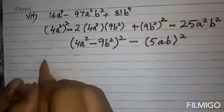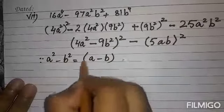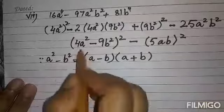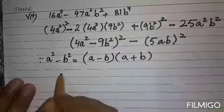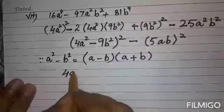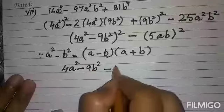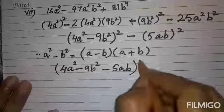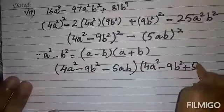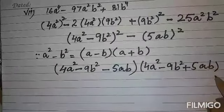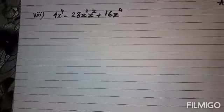Now apply the difference of squares formula: a² - b² = (a - b)(a + b), where A is (4A² - 9B²) and B is 5AB. Expanding gives: (4A² - 9B² - 5AB)(4A² - 9B² + 5AB). This is your final answer for the seventh part.